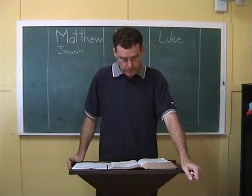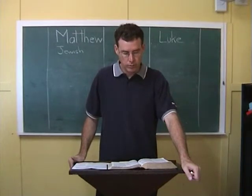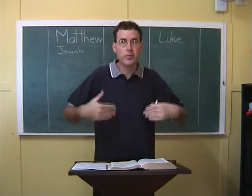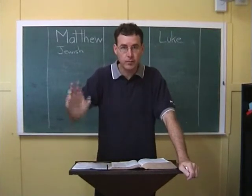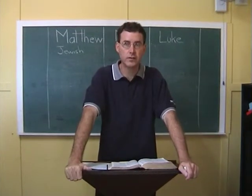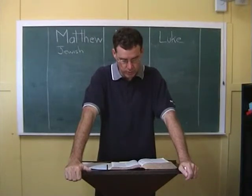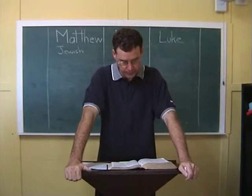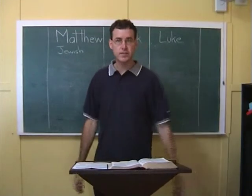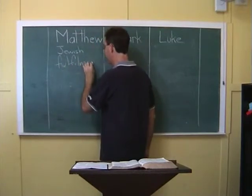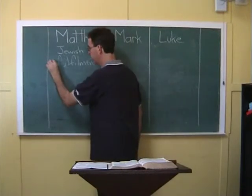Matthew stresses fulfillment more than any other writer. Matthew 1:22 says: 'All this took place to fulfill what the Lord had said through the prophets.' Matthew is saying that in Jesus' life, things are not happening randomly, but fulfilling what the prophets looked forward to. Abraham and David looked for the day of Christ, the Messiah. The birth of Jesus fulfilled the promise of Isaiah 7:14: 'The virgin will be with child and will give birth to a son, and they will call him Emmanuel, which means God with us.'